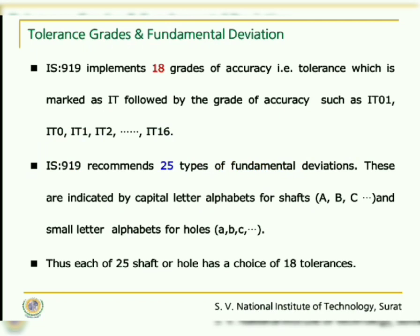IS 919 implements 18 different grades of tolerance. These are marked as IT followed by the grade of accuracy, such as IT1, IT2, IT3 through IT16, plus IT01 and IT0 — in all 18 grades. Similarly, IS 919 recommends 25 types of fundamental deviations. These fundamental deviations are indicated by capital letter alphabets for shafts and small letter alphabets for holes. Thus, each of these 25 shafts or 25 holes has a choice of 18 tolerances.